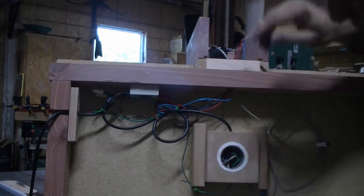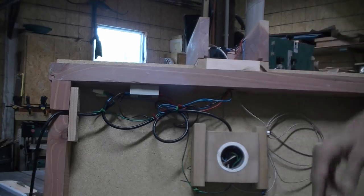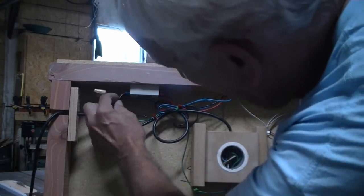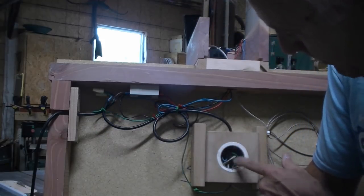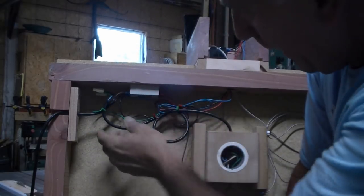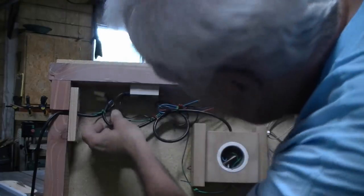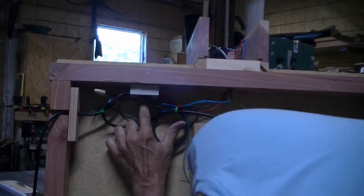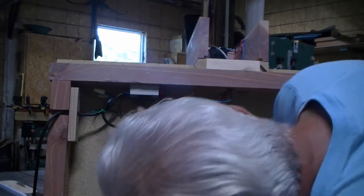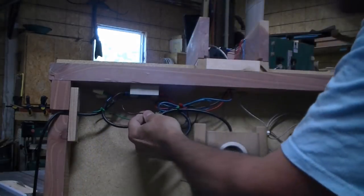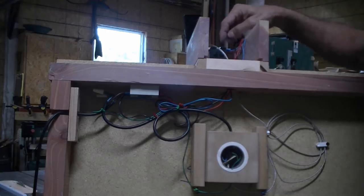The hot wire from the heating element goes to port number two on the SSR. The hot wire from the electric cord goes to port number one on the SSR. Then there's a black wire from that same port, port number one, that travels back up to the switch and connects to port number ten as I mentioned earlier.